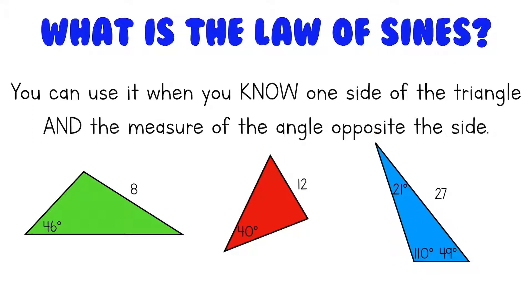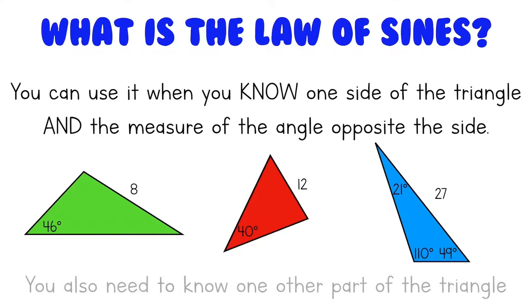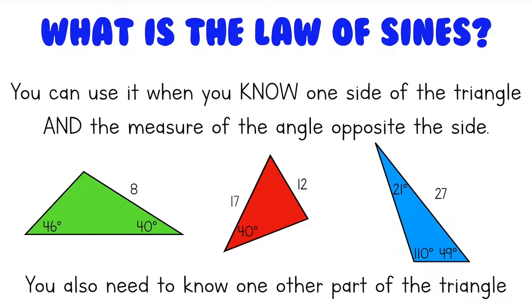You also need one more thing to use the law of sines — you just need to know one other part of the triangle. So that could be an angle, like this 40 degree angle, or it could be a side length, like knowing this side is 17. And for this triangle, you already know two other angles, so you're set to use the law of sines.